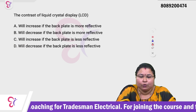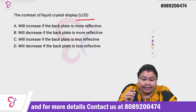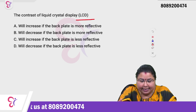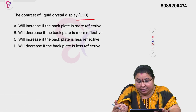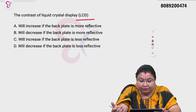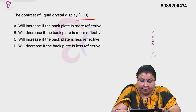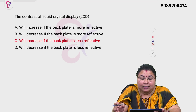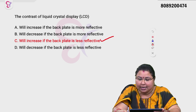The contrast of a liquid crystal display (LCD) — what is the correct option? Option A will increase if the back plate is more reflective, Option B will decrease if the back plate is more reflective, Option C will increase if the back plate is less reflective, Option D will decrease if the back plate is less reflective. The correct answer is Option C — it will increase if the back plate is less reflective.